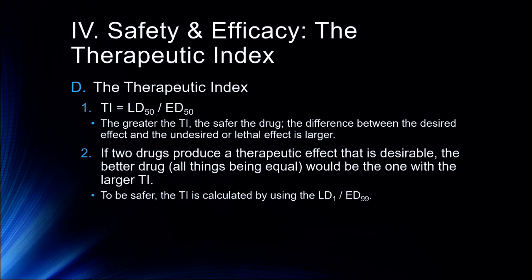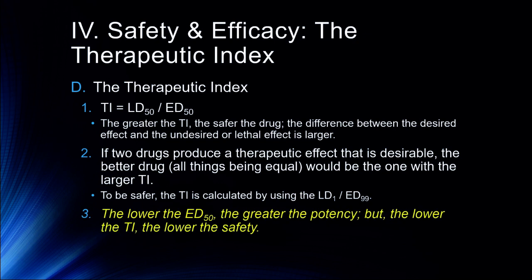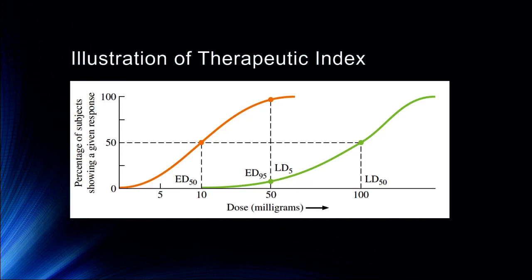To be safe, we calculate the therapeutic index using the lethal dose for 1% of the population versus the effective dose for 99% of the population. The lower the ED50, the greater the potency, but the lower the therapeutic index, the lower the safety. Drugs like fentanyl have a fairly low lethal dose that's not very far off from their effective dose, so we have to be very cautious. For example, a drug with an effective dose of 10 milligrams and a lethal dose of 50 milligrams, versus another drug with a lethal dose of 100 milligrams — the second is probably going to be somewhat safer.